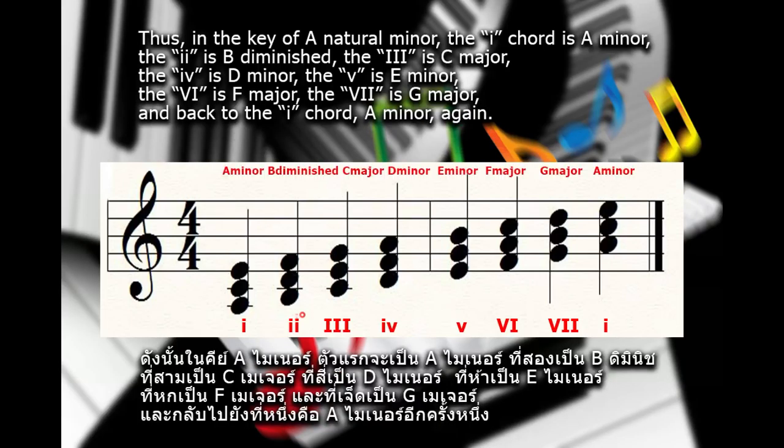Thus, in the key of A natural minor, the first chord is A minor, the second is B diminished, the third is C major, the fourth is D minor, the fifth is E minor, the sixth is F major, the seventh is G major, and back to the first chord, A minor, again.